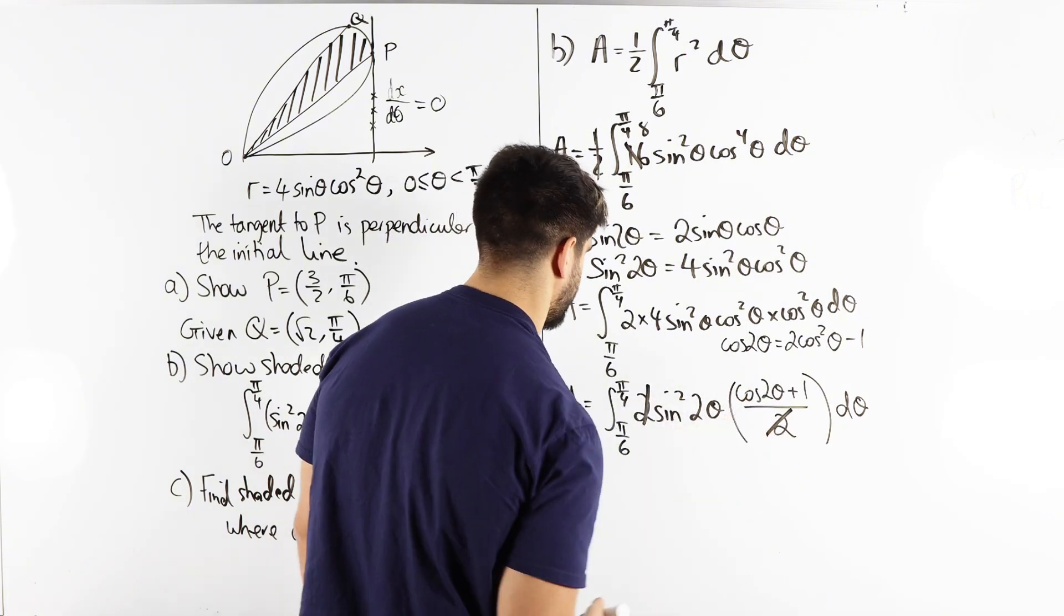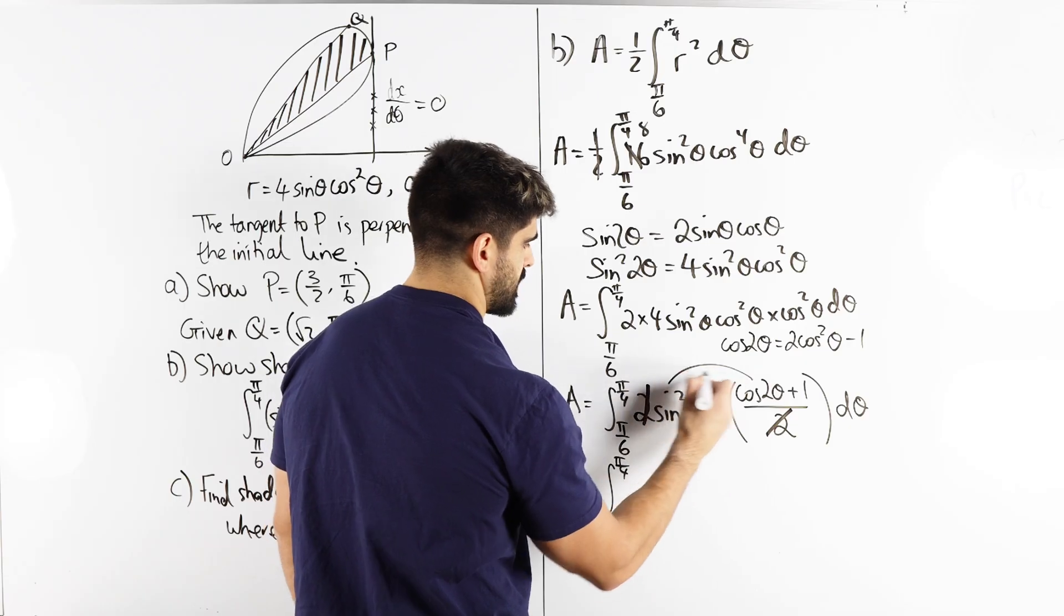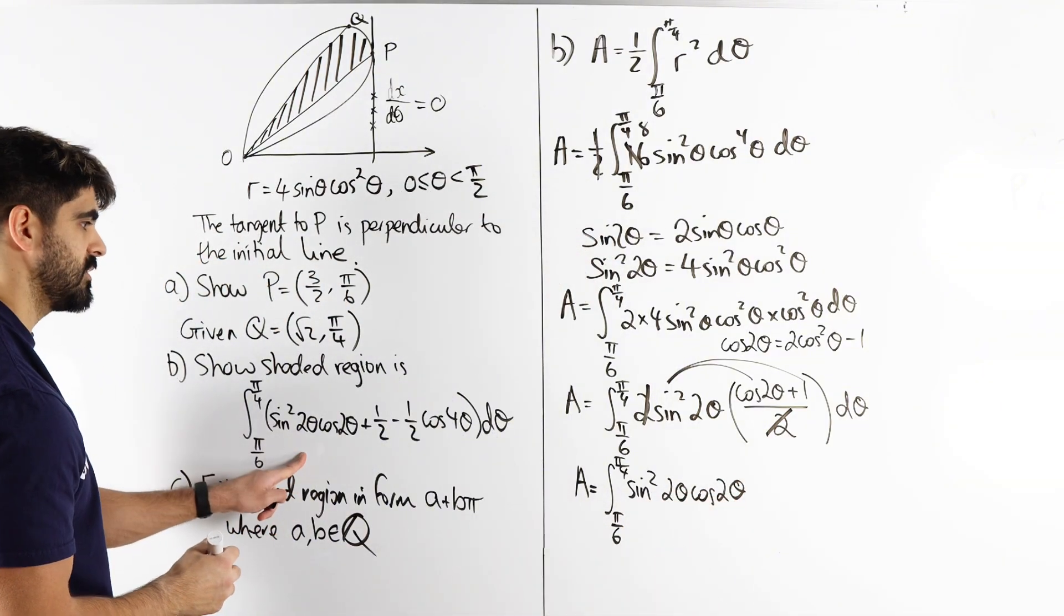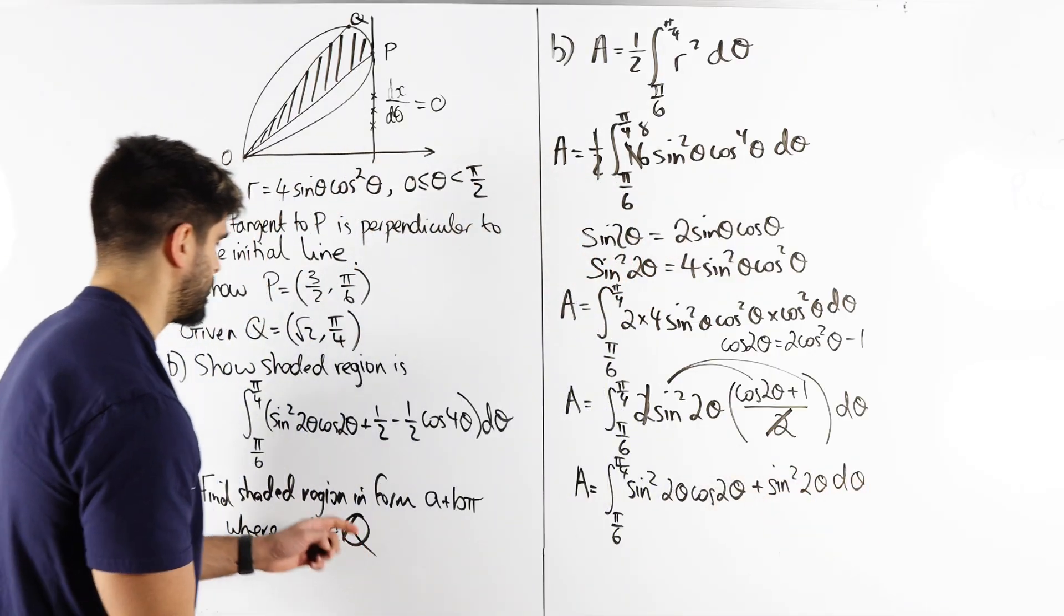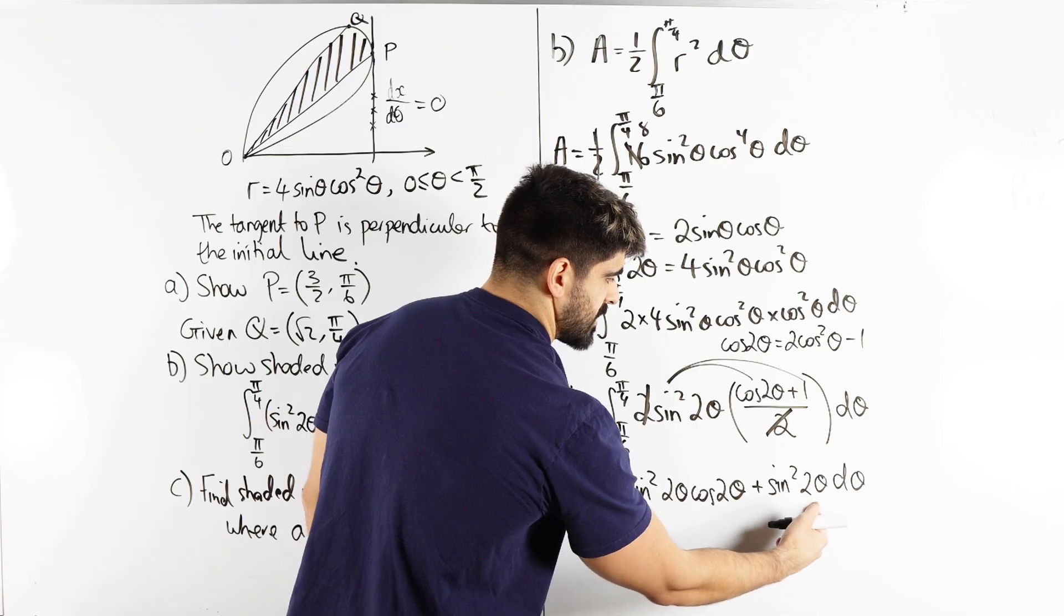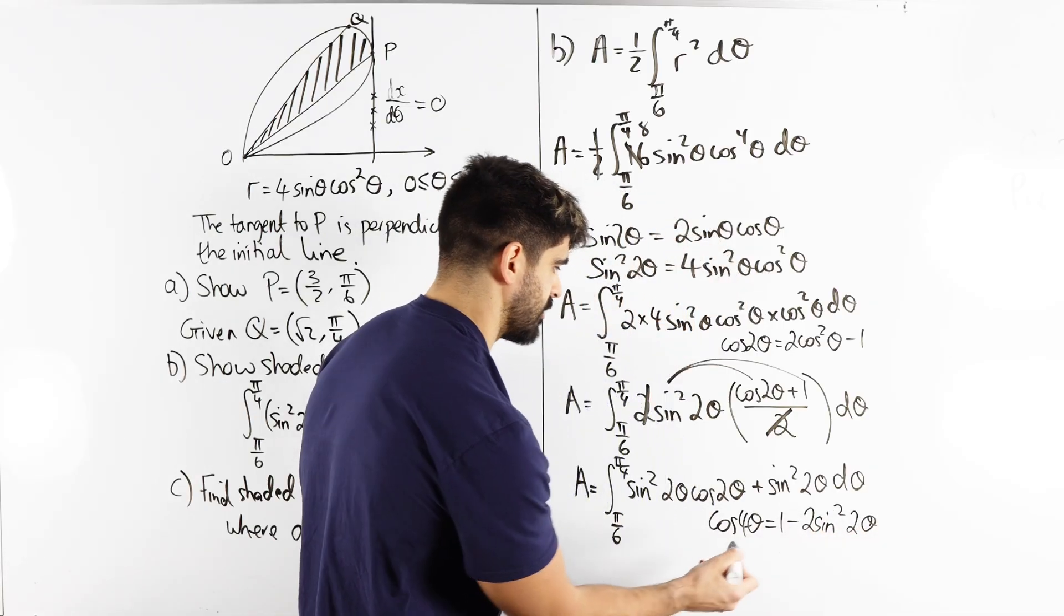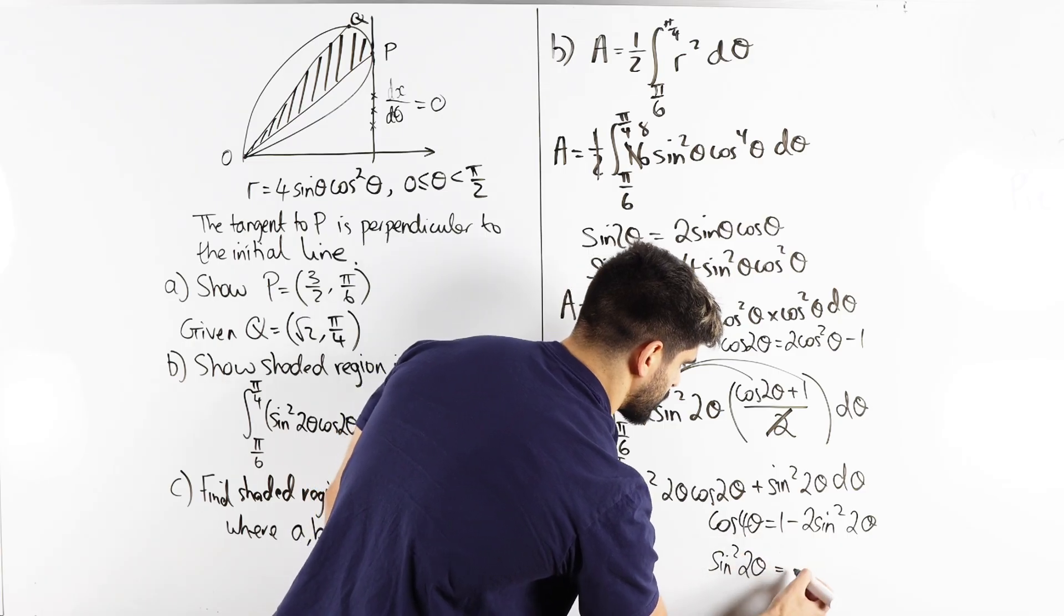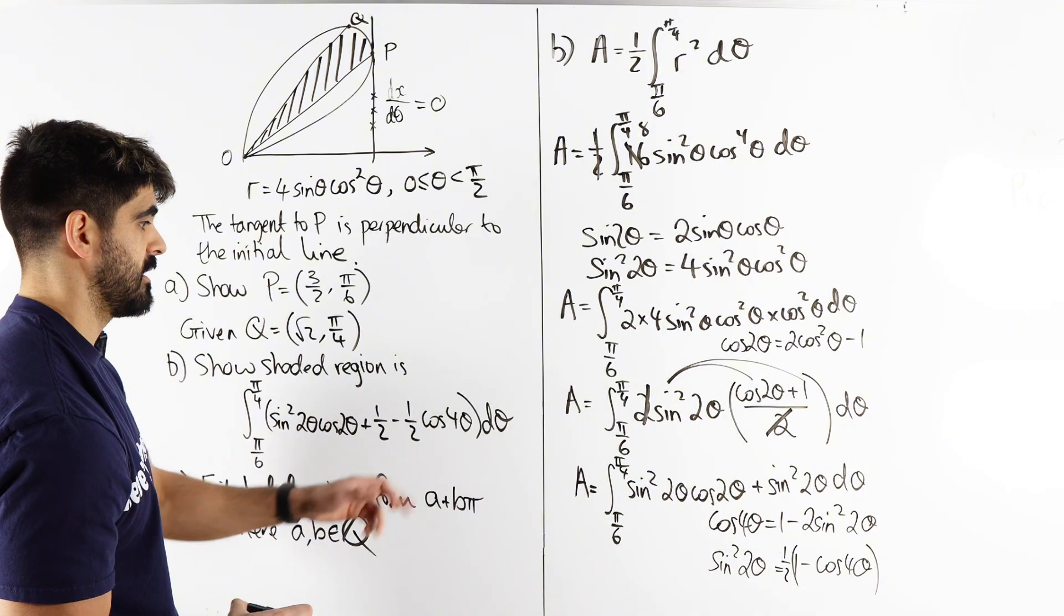This two cancels this. Then I'm going to expand. So I get the integral between pi over six pi over four. You'll be interested to know how many marks this question is. So expanding. I get sine squared two theta cos two theta which is what they wanted but I'm getting plus sine squared two theta. But that's not what they wanted. They wanted a cos four theta. So it looks like we're going to have to do the double angle ID again. So the double angle ID involving sine squared two theta would be cos four theta which is one minus two sine squared two theta. So moving all this around I'm going to get sine squared two theta is one minus cos four theta. And then I have to divide by the coefficient of two so a half.